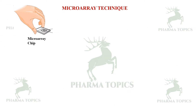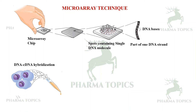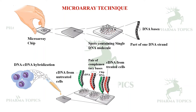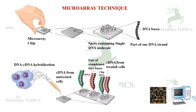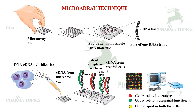The microarray chip contains spots, each holding a single DNA molecule as the probe. The test sample cDNA is poured onto the microarray plate and complementary base pairing occurs. cDNA from the chip pairs with cDNA from treated and untreated cells, and the resulting fluorescence is detected on a monitor. Genes related to cancer, genes related to normal function, and genes equally expressed in both cell types can be identified.